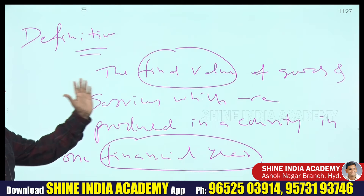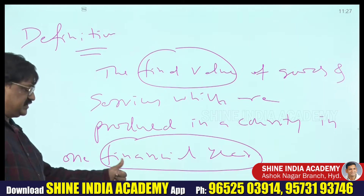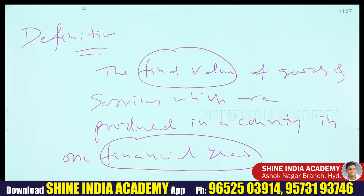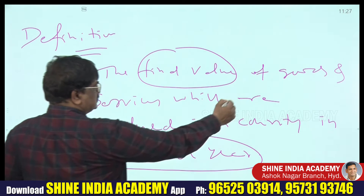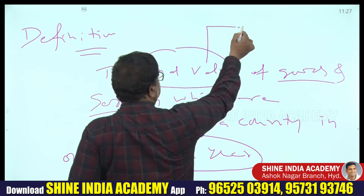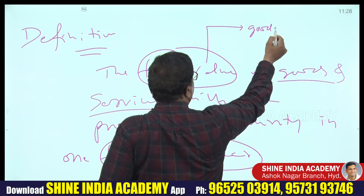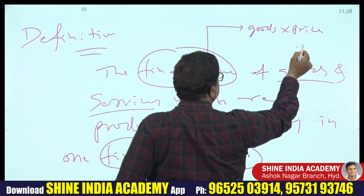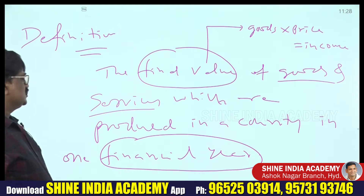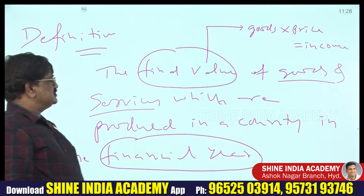The two key words in the definition are 'final value' and 'financial year.' Value means when we multiply goods by price, we get income — that is the value of goods and services. For example, 5 cages of tomatoes at 5 rupees each gives 25 rupees.